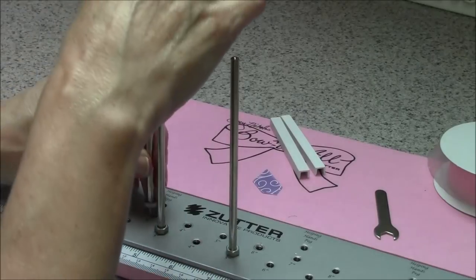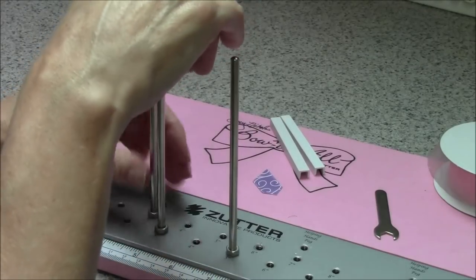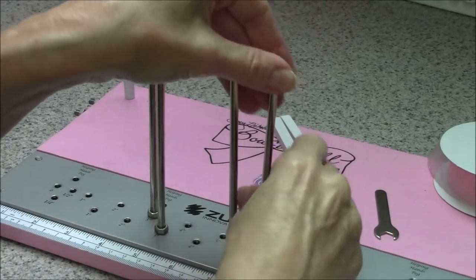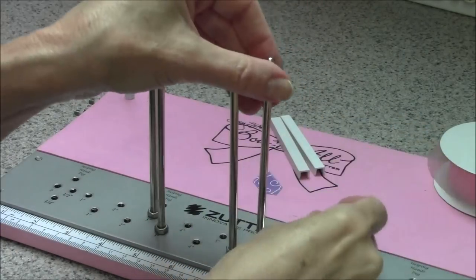Now we're going to add two pegs in the back so we can do a layered bow. My back pegs will be three inches apart and my front two are two inches apart.